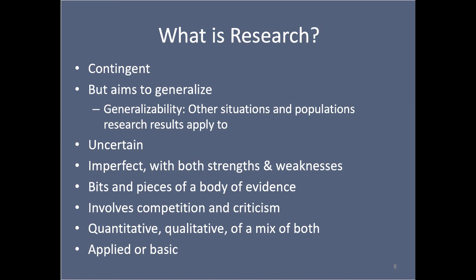Social research is contingent, but you want to generalize from it. It's uncertain too — and not just the uncertainty you learned about in statistics, which was basically sampling error. It's uncertain for all kinds of other reasons. It's imperfect — it has strengths and weaknesses. I've been doing this a while; if you give me any study, if I spend a bit of time with it, I can kind of rip it to shreds. And if it's my own research, I can really rip it to shreds — I know all the things that are wrong with it.